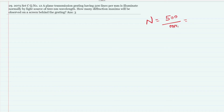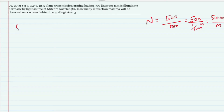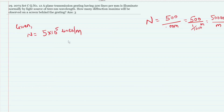Converting 500 lines per mm to lines per meter: 1 mm is 1/1000 meter, so this is 500 divided by (1/1000) = 500,000 lines per meter. This is the given N. The light source has a wavelength of 600 nm, so λ = 600 × 10⁻⁹ meters.